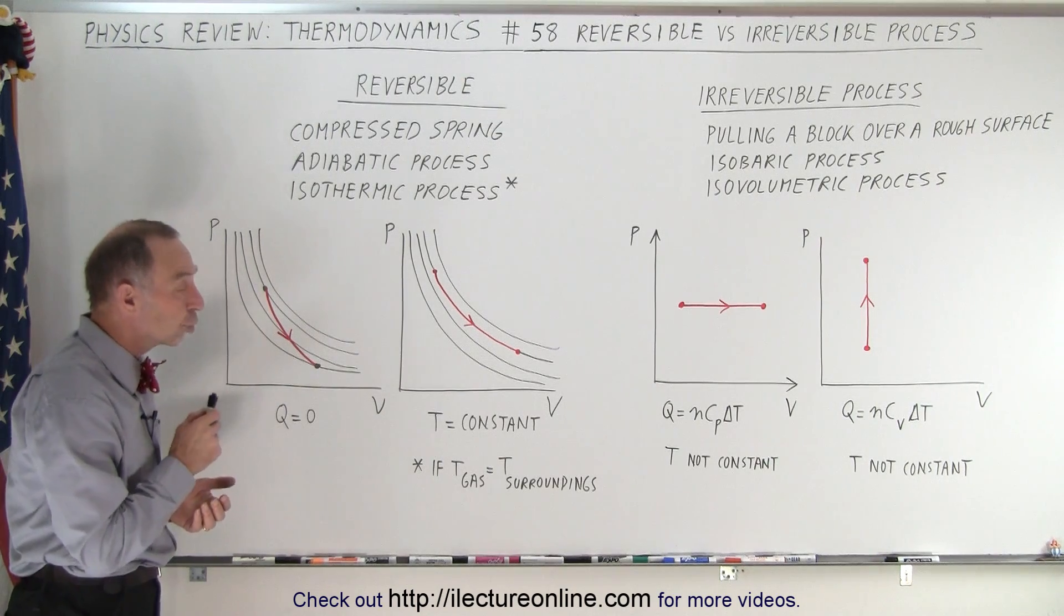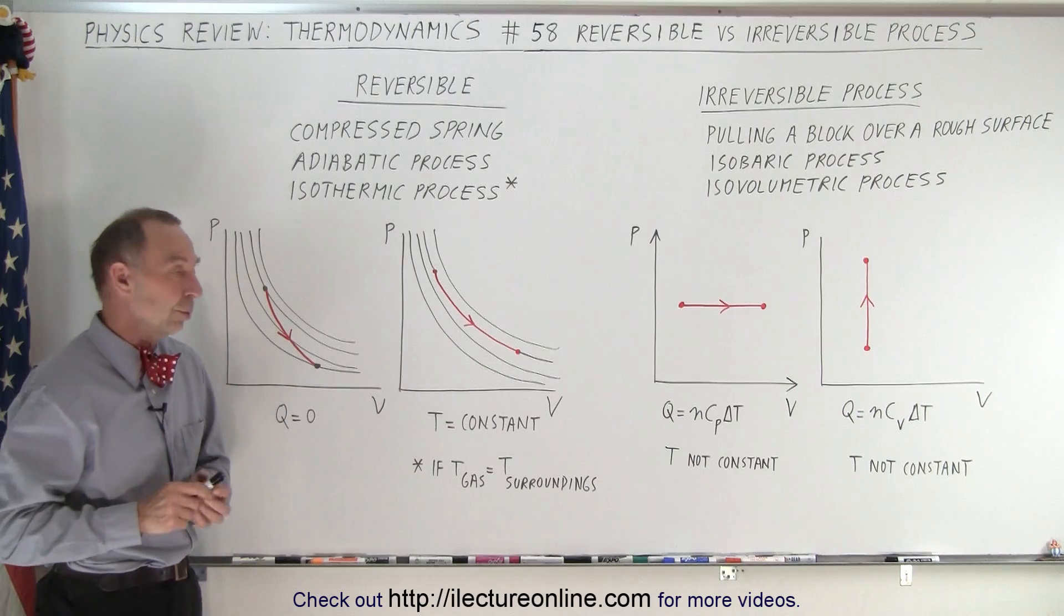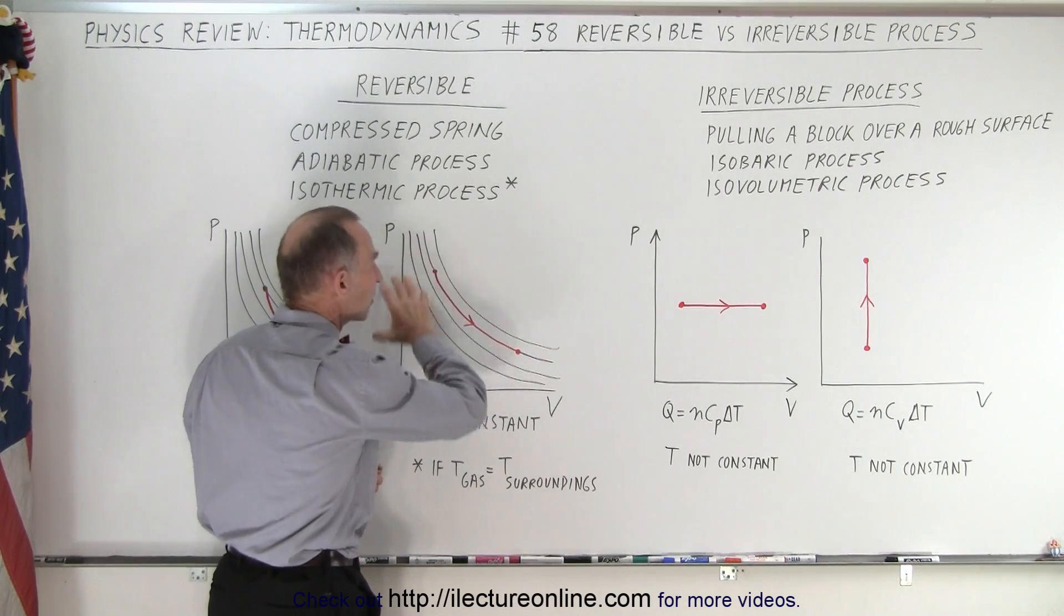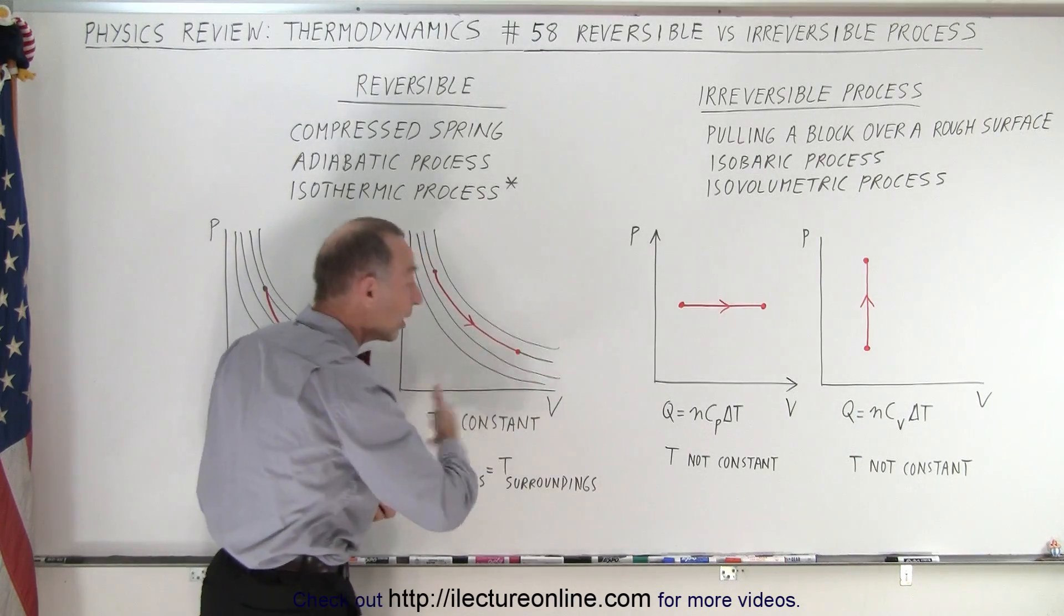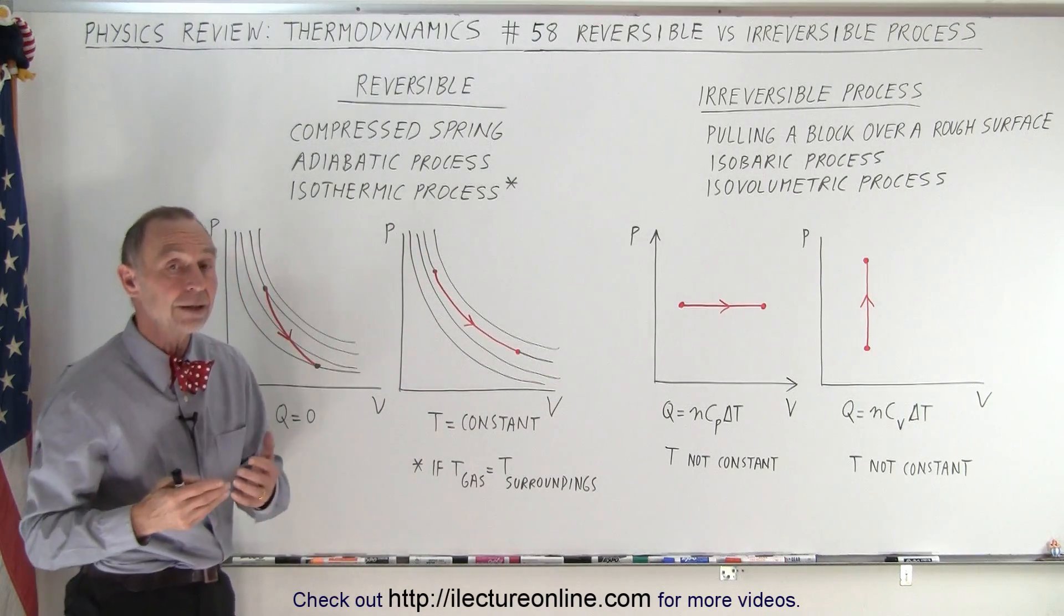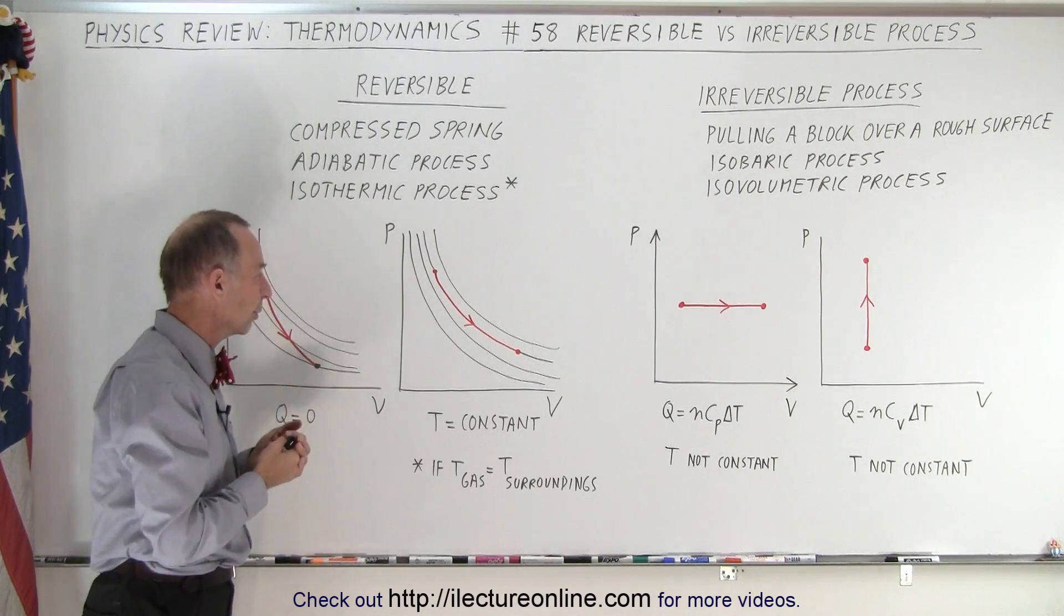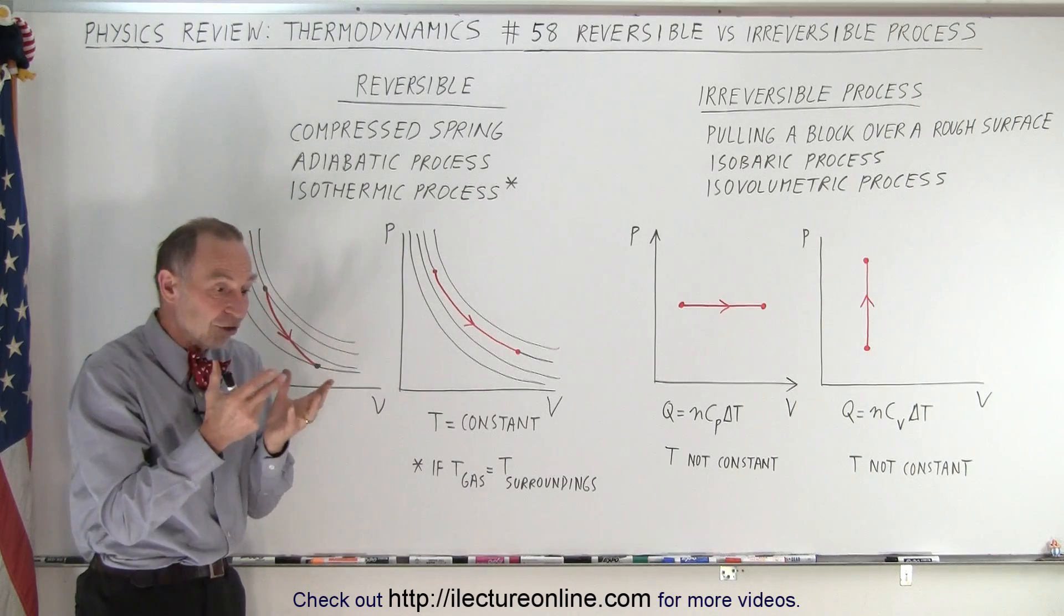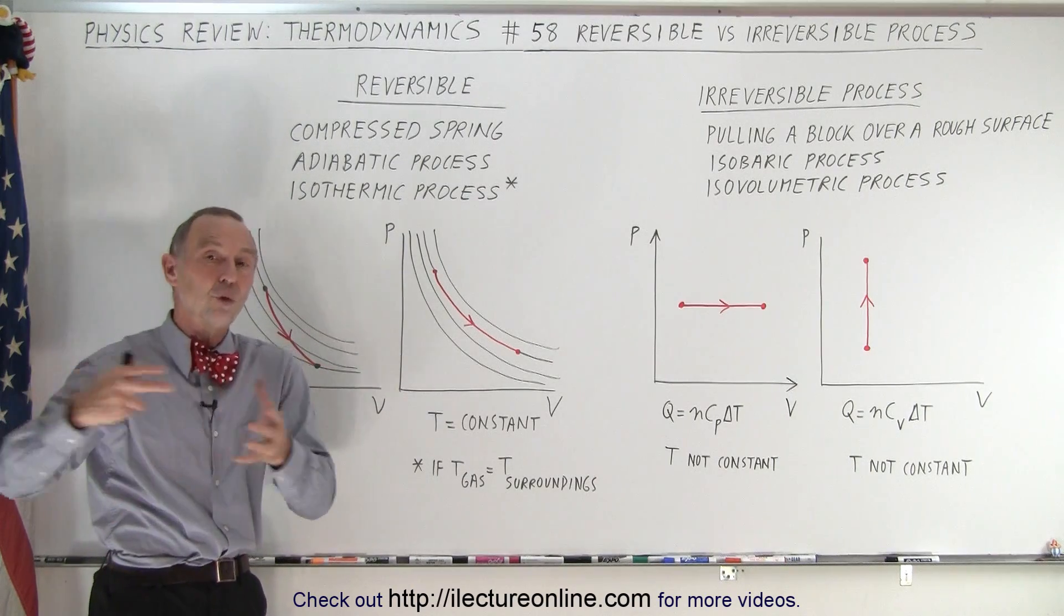An isothermic process could also be reversible with the condition that the temperature of the gas remains the same as the temperature of the environment, because there is a heat exchange. Matter of fact, when you have an isothermic process, where does the energy come from for the work done? That comes from the external source.